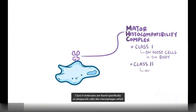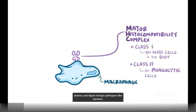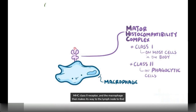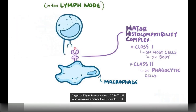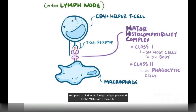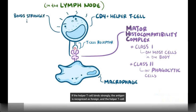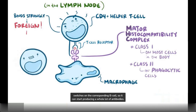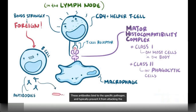MHC class 2 molecules are found specifically on phagocytic cells, like macrophages, which destroy and digest foreign pathogens like bacteria. Once a macrophage destroys a bacterium, it presents a piece of that bacterium on its MHC class 2 receptor, and the macrophage then makes its way to the lymph node to find some T-lymphocytes. A type of T-lymphocyte called a CD4-positive T-cell, also known as a helper T-cell, uses its T-cell receptors to bind to the foreign antigen presented by the MHC class 2 molecule. If the helper T-cell binds strongly, the antigen is recognized as foreign, and the helper T-cell switches on the corresponding B-cell, so it can start producing antibodies. These antibodies bind to the specific pathogen, typically prevent it from attacking the host cells, and at the same time tag the pathogen for further destruction by other immune cells.